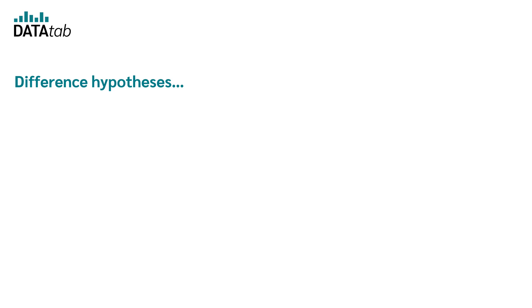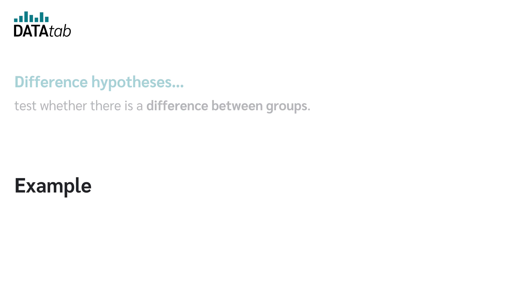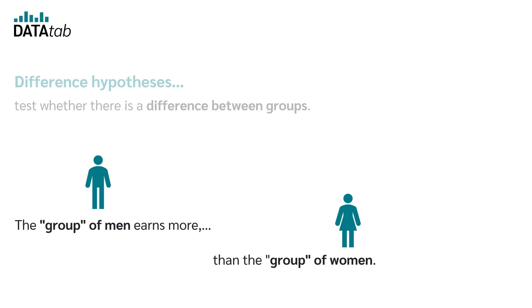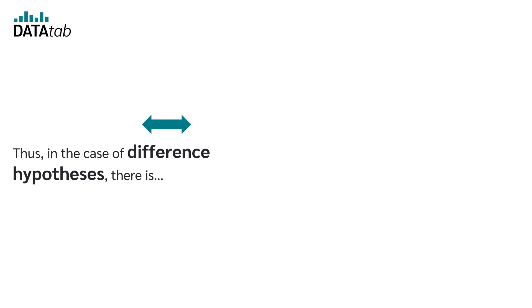Difference hypotheses test whether there is a difference between groups. Example, the group of men earns more than the group of women, or smokers have a higher risk of heart attack than non-smokers. Thus, in the case of difference hypotheses, there is one categorical variable and one ordinal or metric variable.